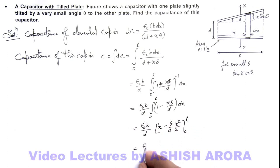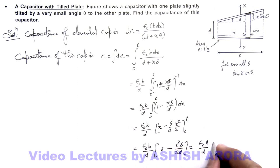Gives us epsilon not b by d, multiplied by l minus l square theta by 2d. After simplification, this gives epsilon not bl (which is the area of the plates) by d, multiplied by 1 minus l theta by 2d. That will be the final result of this problem.